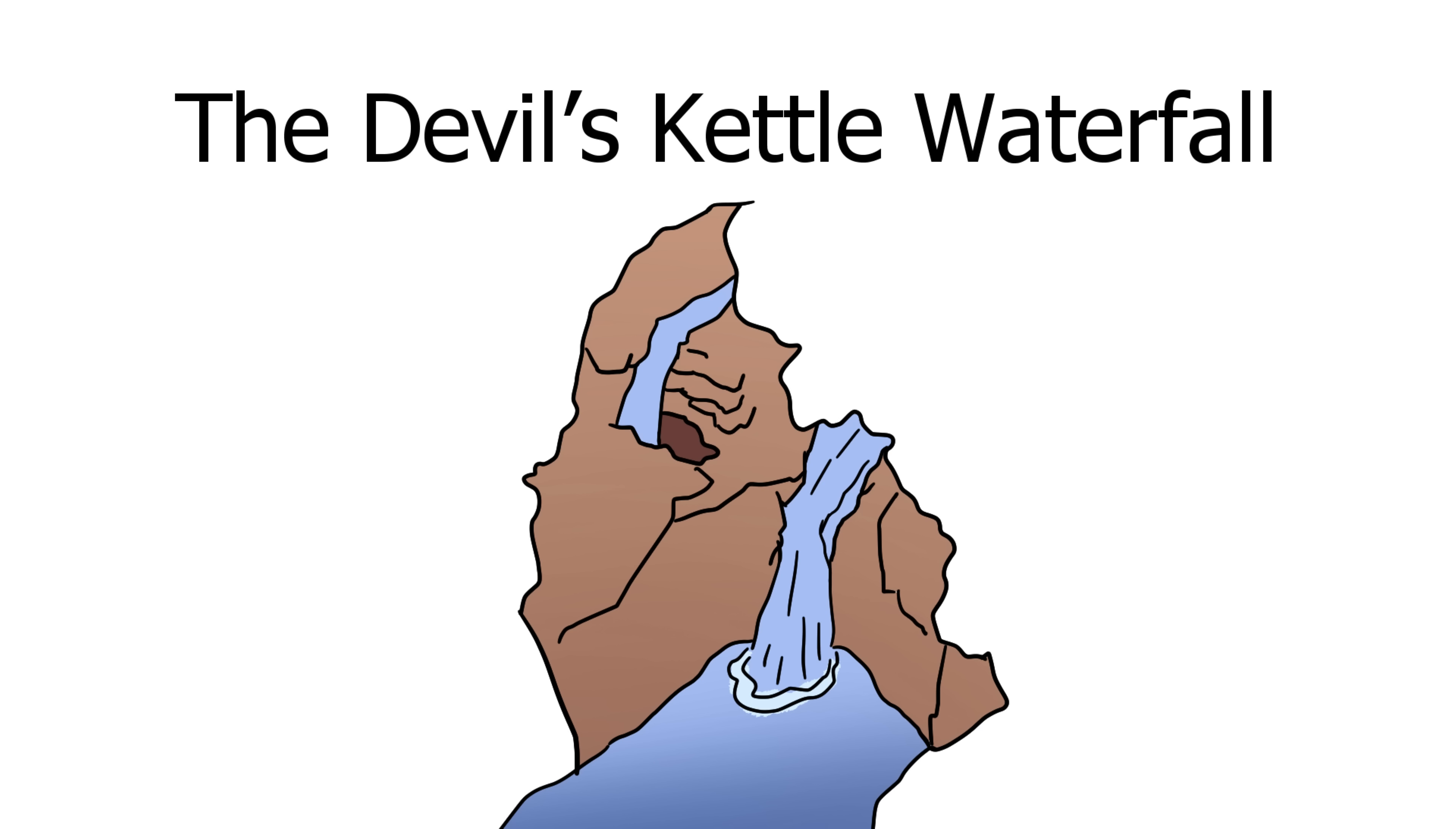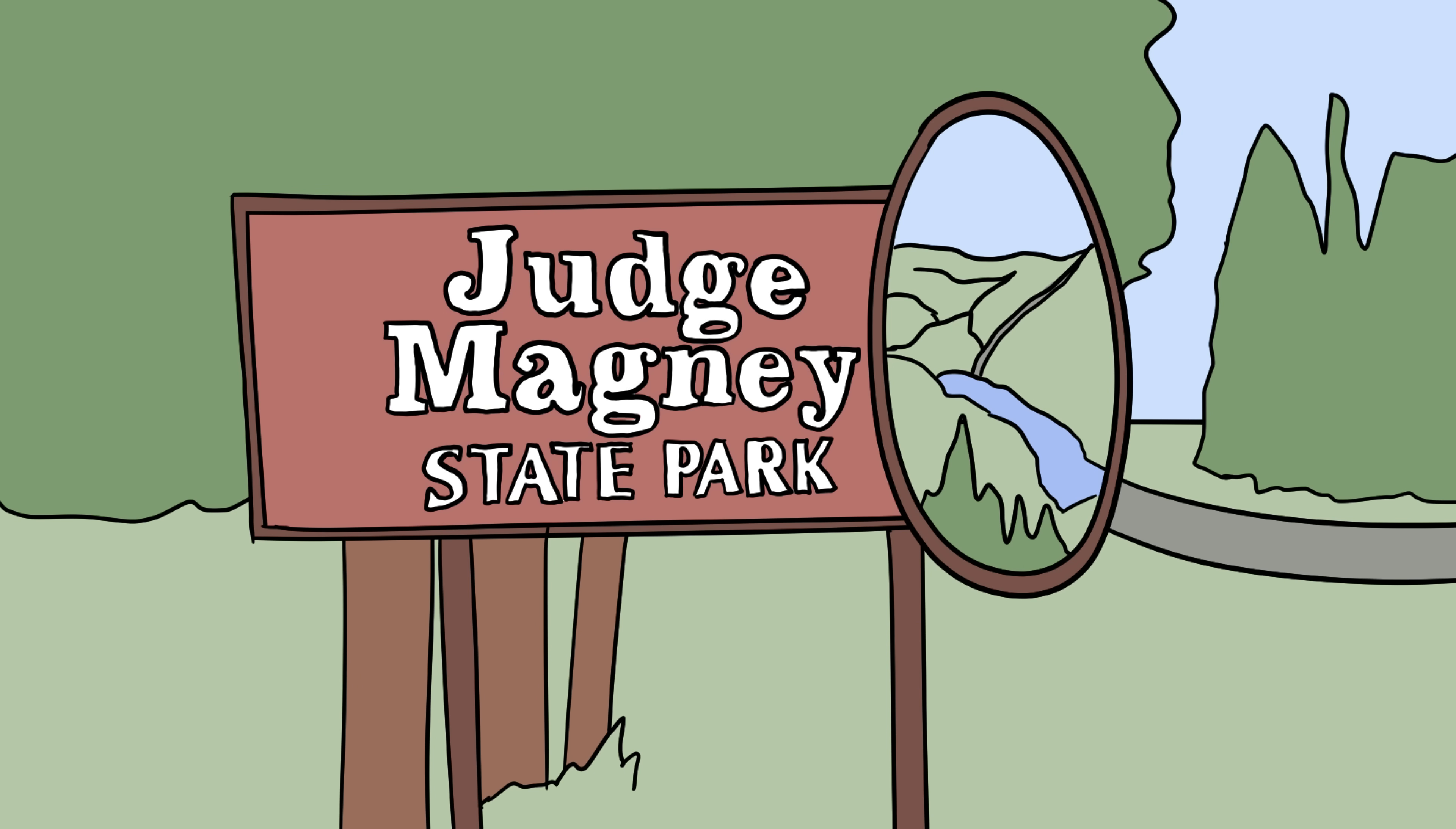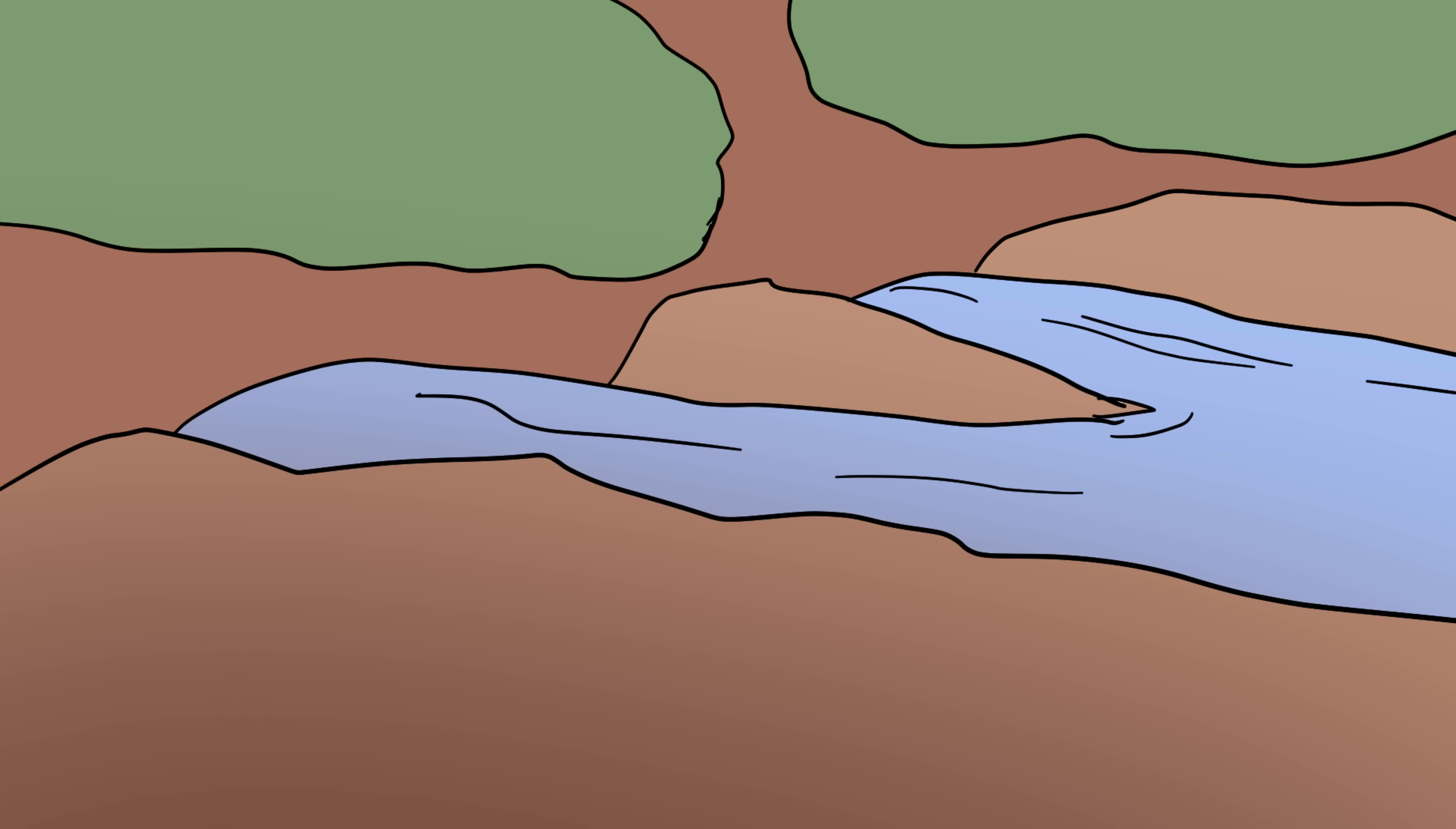Number 3, the Devil's Kettle Waterfall. In Minnesota's Judge C.R. Magney State Park, there's a waterfall that has been confusing scientists and visitors for decades. The Brule River splits into two streams. One side flows normally, tumbling down the rocks, the other side plunges into a giant hole called the Devil's Kettle, and then vanishes.